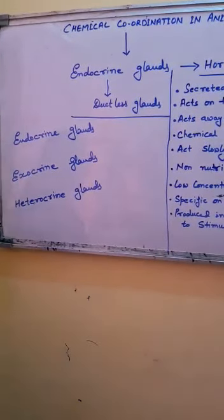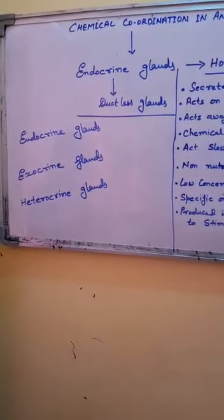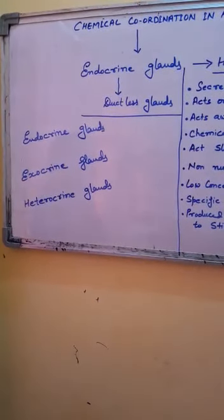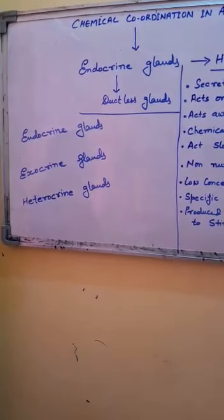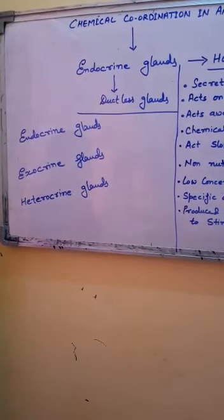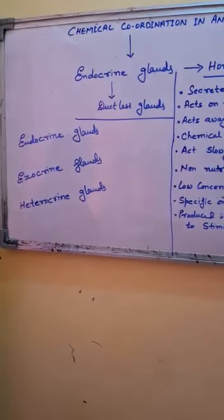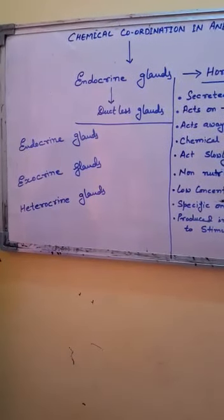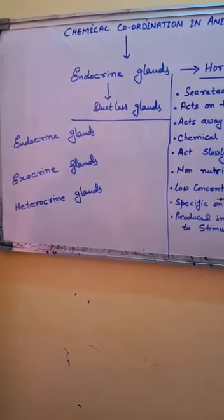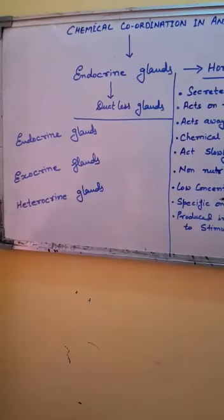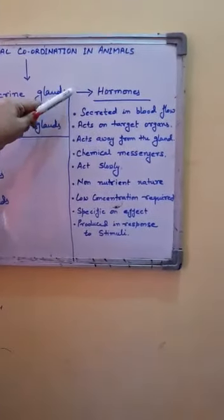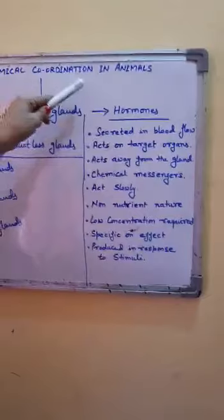So now we know that glands are of three types: endocrine, which do not have their own ducts and release their secretion directly into blood flow; exocrine, which have ducts and release their secretion through ducts to a specific part or organ; and heterocrine, which have both endocrine and exocrine nature for different secretions. Endocrine glands secrete chemical substances called hormones, and these hormones are responsible for chemical coordination in animals.